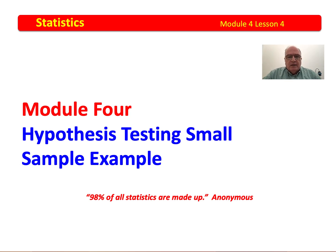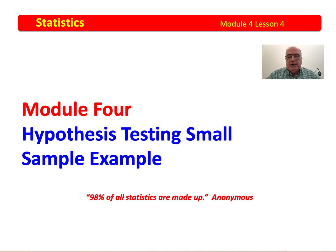Welcome back to the final lesson of Module 4, where we examine the use of a small sample T-score in order to solve a problem. We said earlier that we assume X-bar is a good indicator for mu using the central limit theorem, and that S is a good indicator of sigma. The smaller the sample gets, the less S can be counted on as a good indicator for sigma, meaning that the score must be expanded some — and for that we use a T-table.